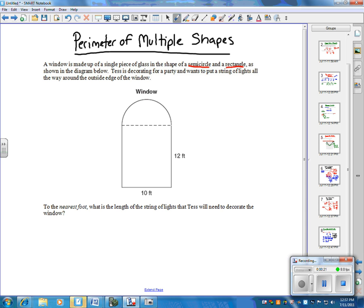So these lights go all the way around the outside edge of the shape. Now, if we're going to find the distance around the shape, we need to use perimeter.